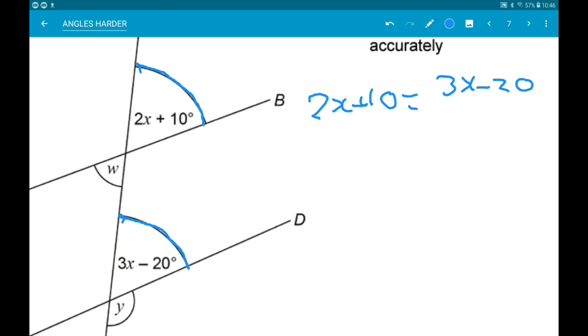So if we add 20 to both sides, then we have 2x add 30 is equal to 3x. And then subtract 2x. We get 30 degrees is equal to x. From that, we can now work out size of 3x minus 20. So that's 3 times 30 minus 20. 3 times 30 is 90 minus 20 is 70 degrees.